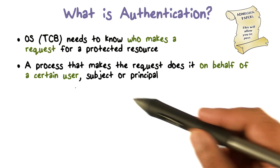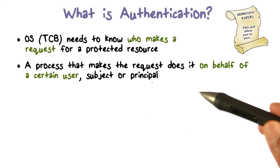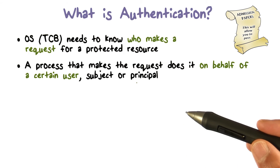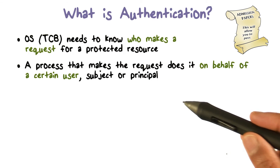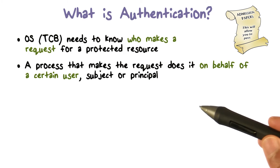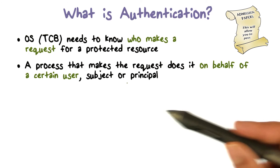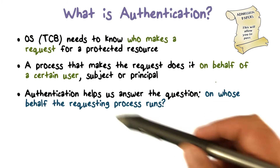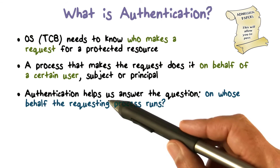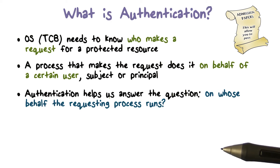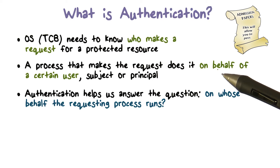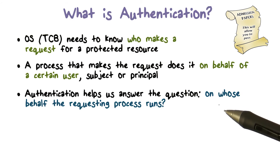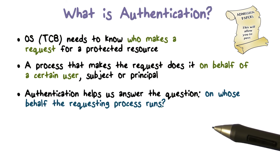We call a user also a subject or a principal — these are the active entities that initiate requests or cause actions. These terms are used interchangeably, but we'll stick with 'user.' Authentication is essentially going to help us answer this question: if a process is making a request, to know who is making the request — what user is making the request — we must answer the question of on whose behalf the process is running.